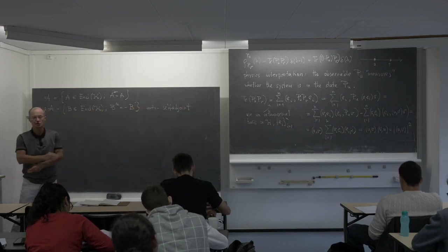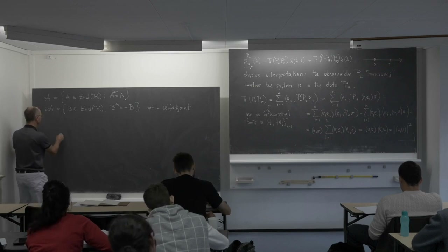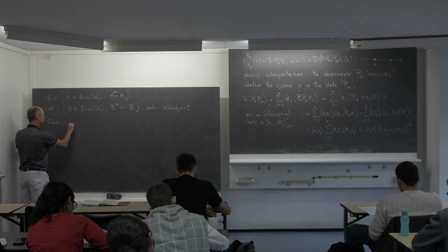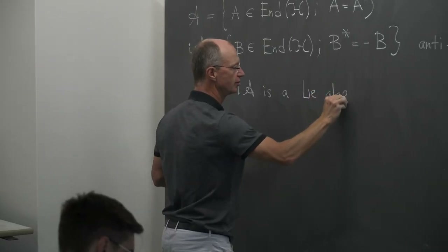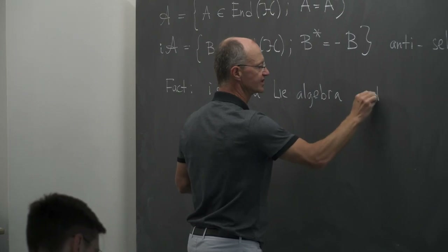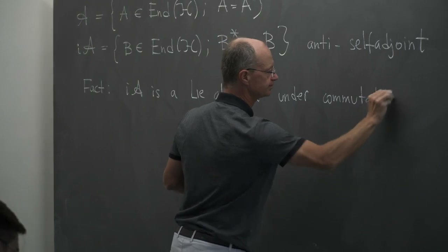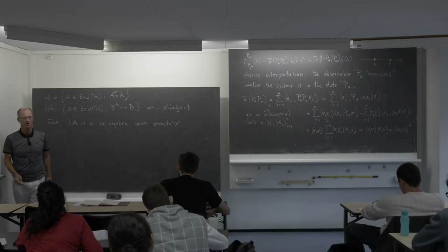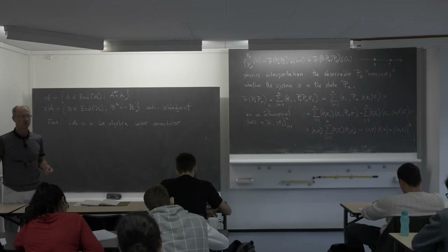Anti-self-adjoint operators have an interesting property: they form something called a Lie algebra under the commutator. Let me recall that the commutator of matrices is defined as [B₁, B₂] = B₁B₂ − B₂B₁.